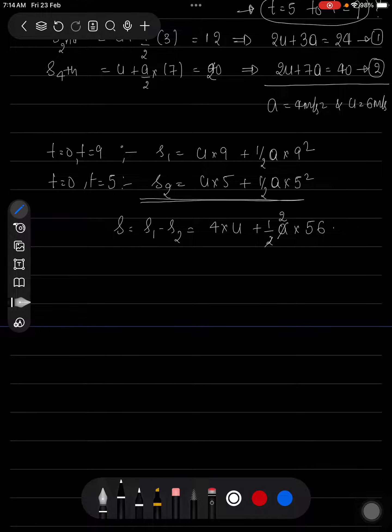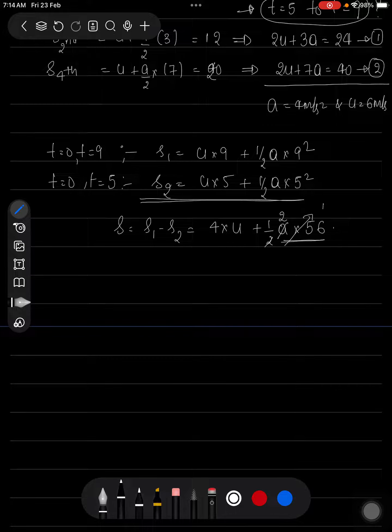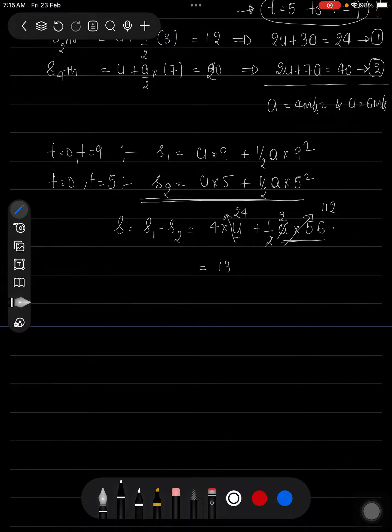So this is 4. So this will cancel out 2 times. 56 into 2 will be 112. This is 6, 4 times 6 are 24. 112 plus 24, this will be equal to 136 meters.